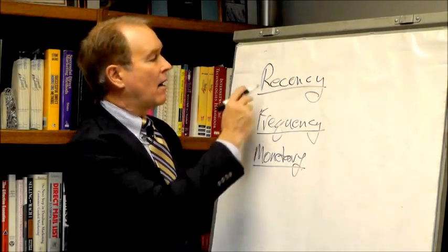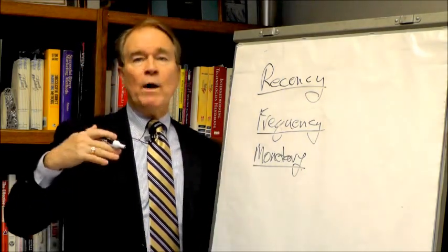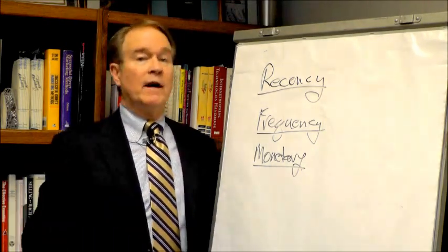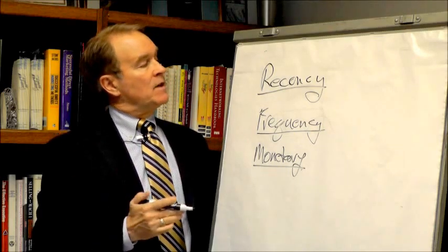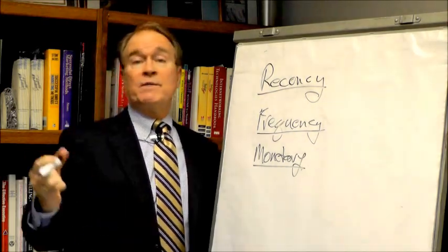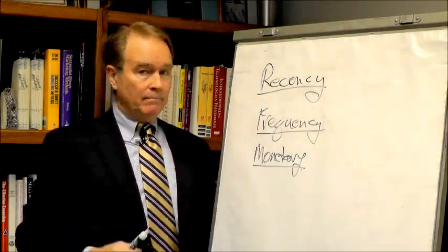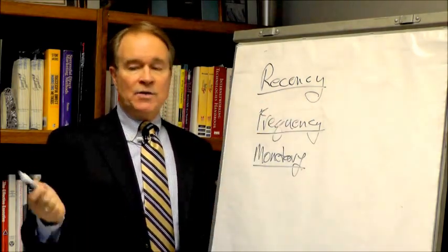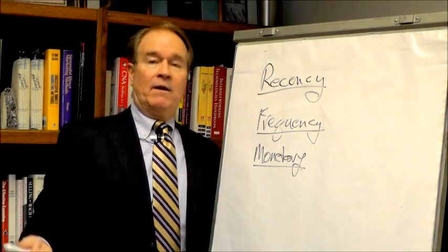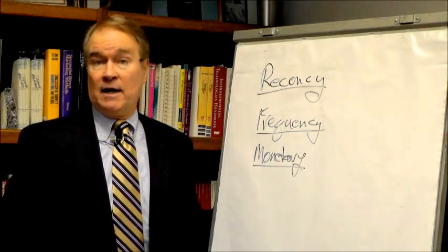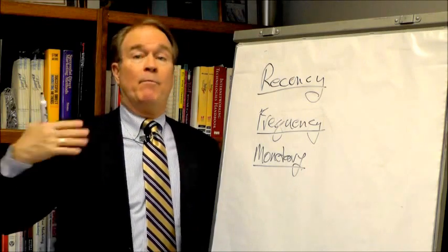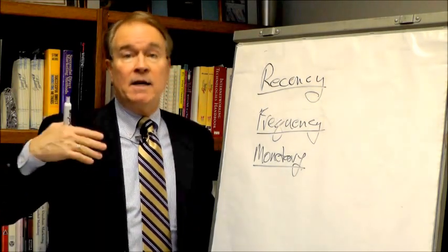So that builds you the basic RFM. Now when you're applying this, we typically do some kind of scoring. Again, we'll do another video on the scoring, but oftentimes people will say it's really the most important because we know they're alive is recency. But then you say to yourself, well it's one thing to not mail the people you haven't heard of in a long time if they only order once and didn't spend much, but what are we gonna do if they bought a bunch of times and they spent a lot but they're very low recency?